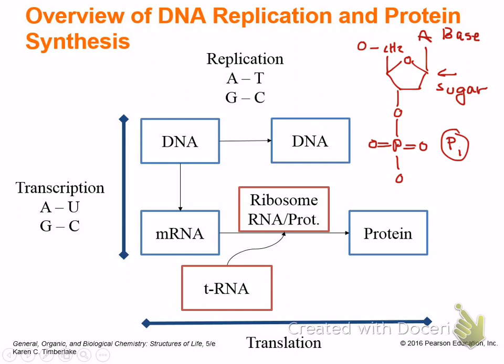The DNA polymerase latches on and then you have the leading strand and the lagging strand. The leading strand is made continuously, and the lagging strand is made up in little pieces that have to be pieced back together. That's the part we covered at the last lecture — just replication.